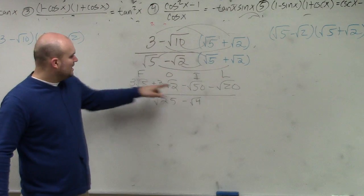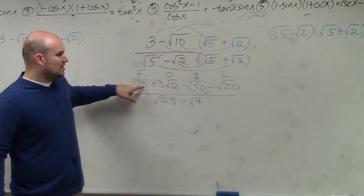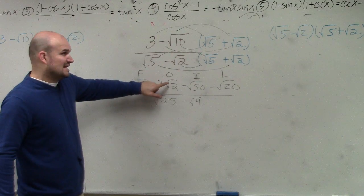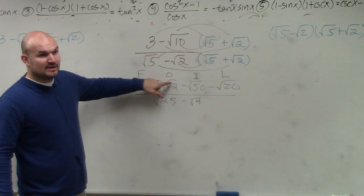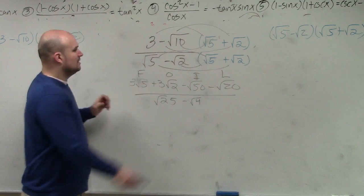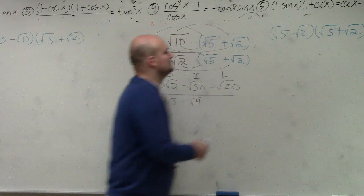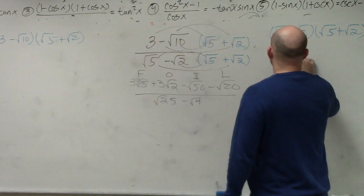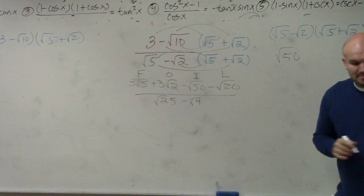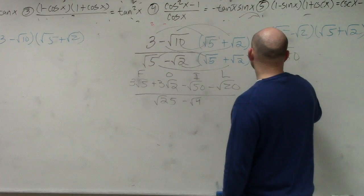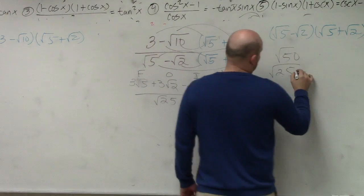So now we just simplify. I can't combine these. These aren't like terms, right? The index is the same, but the radicand is not. Does everybody agree? So I can't combine them. Can I simplify the square root of 50, though? Yes, let's just do a little work over here. Square root of 50, 50 is not a square number, but I can take the square root of it. That's 25 times 2, which is 5 square root of 2.